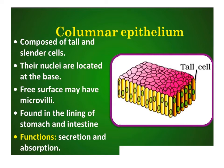Columnar epithelium is composed of a single layer of tall and slender cells having nuclei at their base. It is found in the lining of the stomach and intestine. The free surface of the cells may have microvilli, in which case it is called brush border columnar epithelium. It is involved in the functions of secretion and absorption.